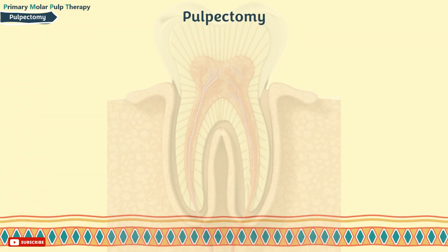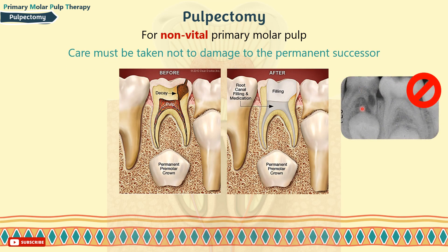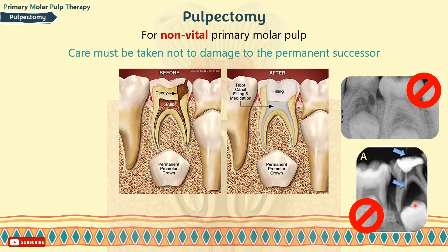Moving on to the third technique, pulpectomy — the removal of the whole pulp tissue, including both coronal and radicular portions. It is indicated in non-vital teeth or teeth diagnosed with irreversible pulpitis, without accompanying signs of internal or excessive root resorption, intra-radicular lesion affecting the permanent successor, severe bone loss, mobility, or perforation in the furcal area. Pulpectomy is often considered difficult in primary molars because of the complexity of ribbon-shaped canals, although instrumentation is often easier than some texts may suggest. The risk of damage to the permanent successor also needs to be considered, but if conditions are favourable it is the treatment of choice for non-vital pulps.